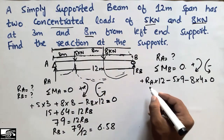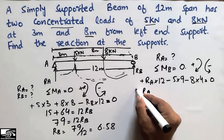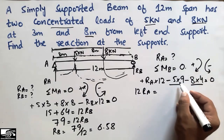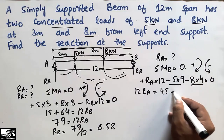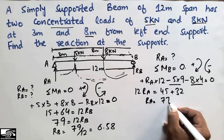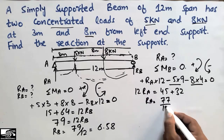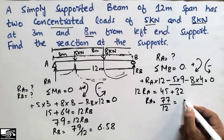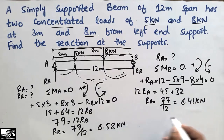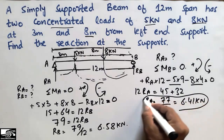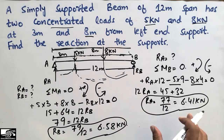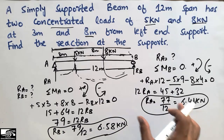Setting moments at B equal to zero: 12·RA − 5 × 9 − 8 × 4 = 0, so 12·RA = 45 + 32 = 77, giving RA = 77 ÷ 12 = 6.41 kN. So RA = 6.41 kN and RB = 6.58 kN are the two support reactions for this simply supported beam.